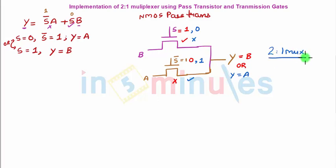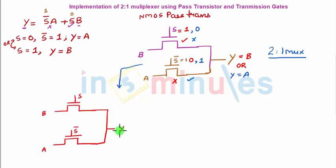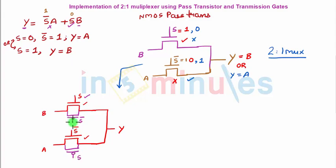Now, how do we enhance this to use transmission gates? Let's redraw the same diagram. The trick is: after drawing the circuit with NMOS pass transistors, add a PMOS transistor in parallel with each NMOS. Since NMOS is present, we add PMOS in parallel. The gate input to each PMOS is the complement of the input applied to its parallel NMOS. So for the NMOS with gate S, the PMOS gets S̄, and for the NMOS with gate S̄, the PMOS gets S. This gives us a 2-to-1 MUX using transmission gates.